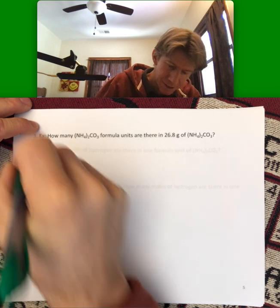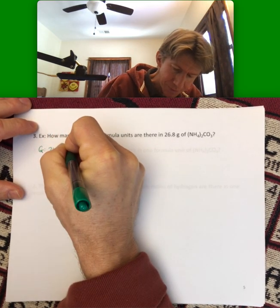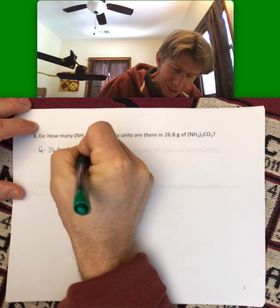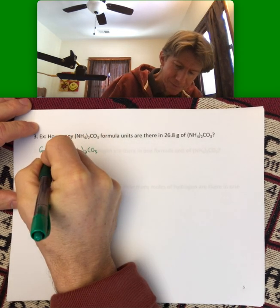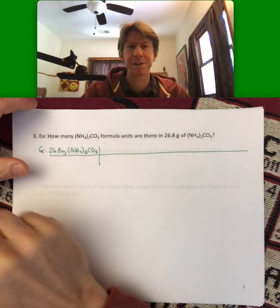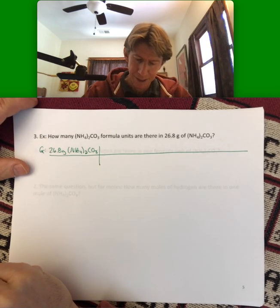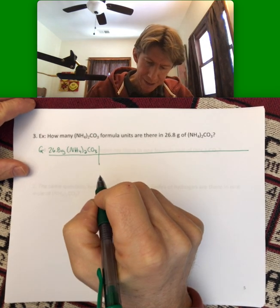All right, so my given is 26.8 grams ammonium carbonate and I'm just going to write out that formula, and I'm going to make my long picket fence here because I have a feeling that because I write this out each time it's going to be a little longer.